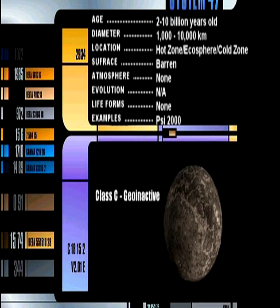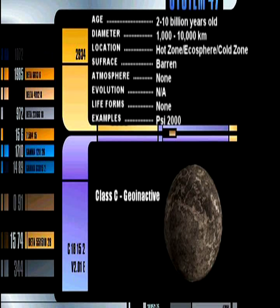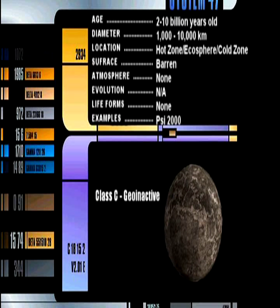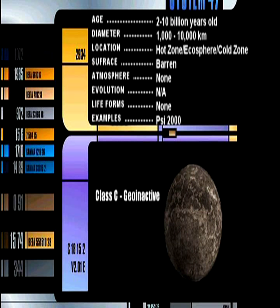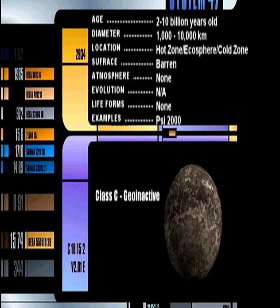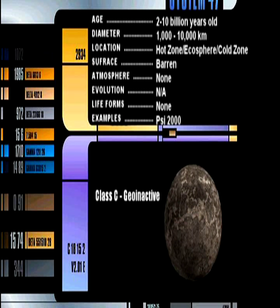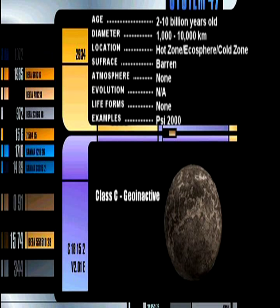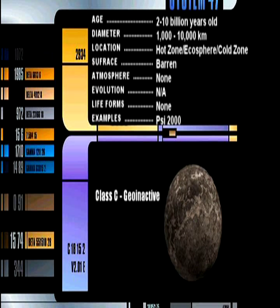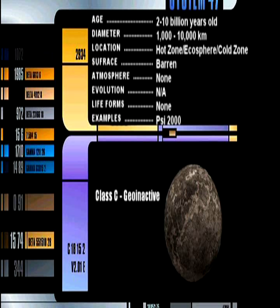Class C Geoenacted Planet. When volcanic activity on a Class A planet ceases, it is considered a Class C. Essentially dead, these small worlds have cold, barren surfaces and possess no geological activity and have no known useful element deposits.